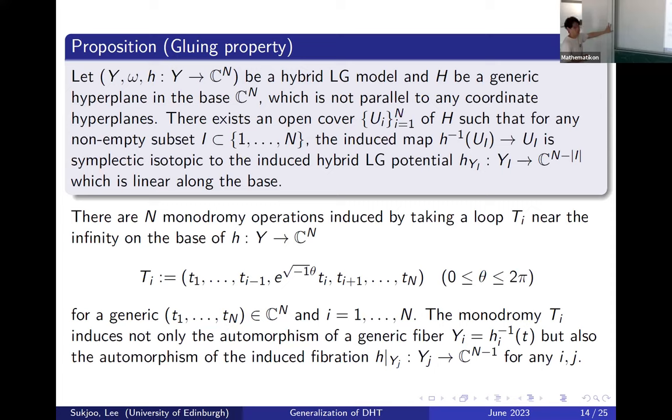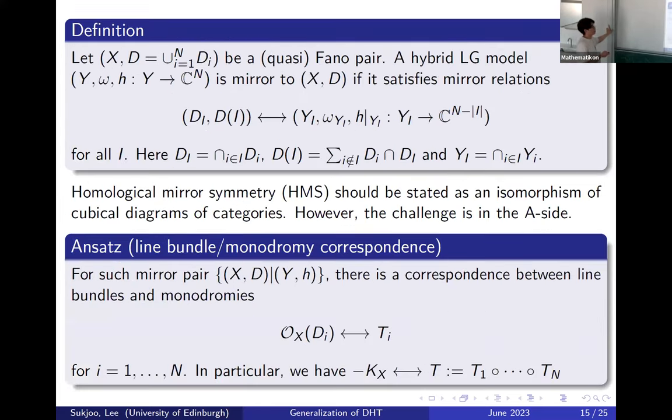If you have two components, n equals two, and you have this monodromy, the monodromy induces not only the automorphism of the generic fibers but also we expect it to preserve the fiber. So you can now define what we mean by the hybrid Landau-Ginzburg model: you start with the Fano pair with n plus one components, and I have n functions which encode all the mirror symmetry information of the intersection.